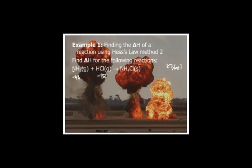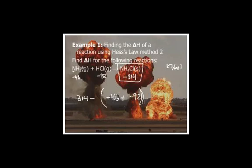So what you're going to do is take the products minus the reactants. Products are ammonium chloride: negative 314, minus the sum of the reactants, which is negative 46 plus negative 92. These are all one-to-one-to-one ratios; if there were a coefficient of two, we'd have to multiply. The value of delta H for this reaction is negative 176 kilojoules per mole. You just take products minus reactants — it's kind of an accounting thing. A thermodynamicist is really an accountant for energy in reactions.